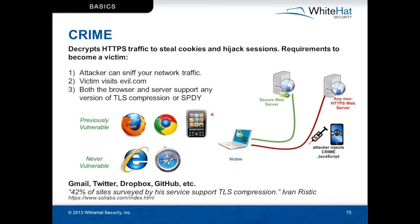Previously vulnerable browsers were Firefox and Chrome. They have been patched and are okay now if you're running the latest versions, but a bunch of the mobile browsers are suspect right now according to the research. On the server side, according to Ivan Ristic's research, 42 percent of the sites surveyed support TLS compression. Some examples that were exploitable with this attack were Gmail, Twitter, Dropbox, and GitHub.